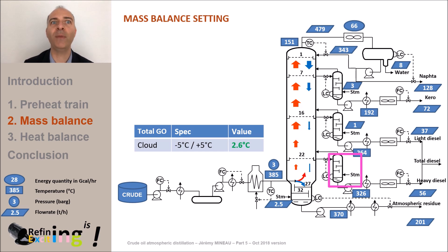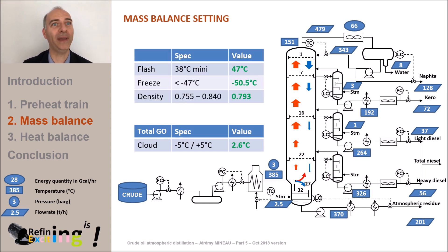The standard stripping ratio is about 20 kg of stripping steam per ton of heavy diesel. Which will correspond, for our case, to 1.2 ton per hour of stripping steam. So, in your opinion, does heavy diesel side stripper have an impact on the total diesel cloud point?